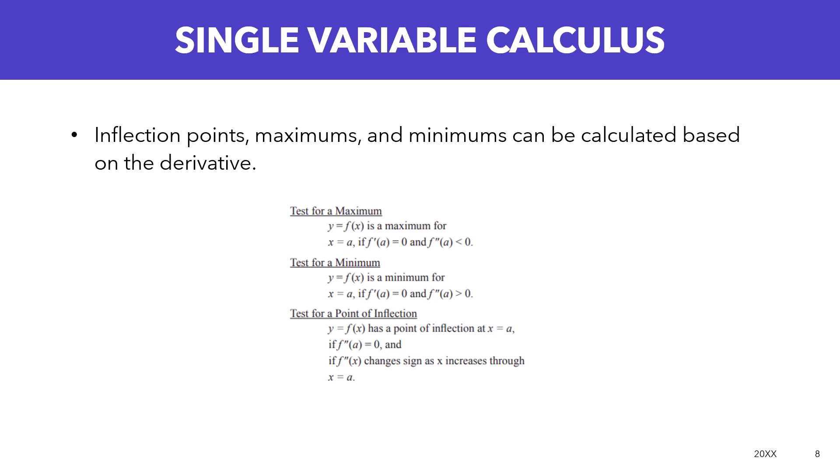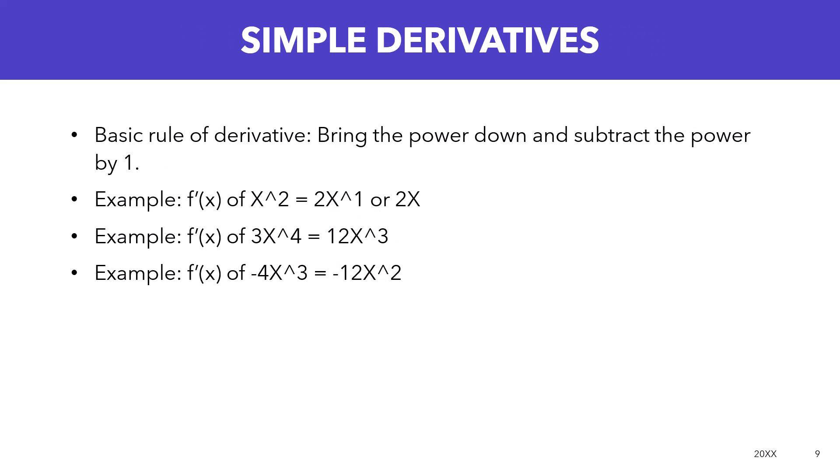Let's talk about simple derivatives. What is the principle? The basic rule for the derivative of a simple equation is to bring the power down and subtract that power by one. For example, if you have x squared, you're going to bring the two down so now it's two times x, and then you subtract one from the power, so two minus one raised to the first power or 2x.